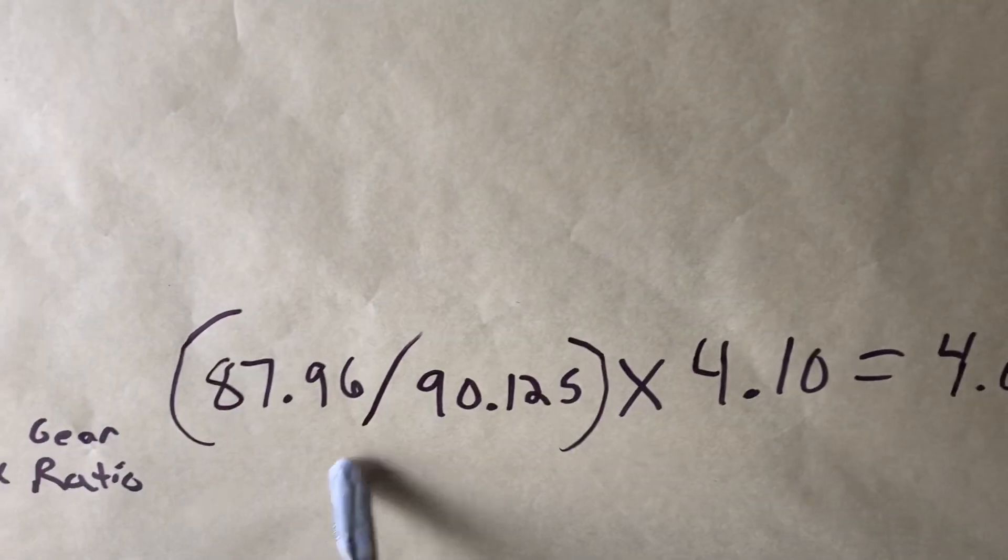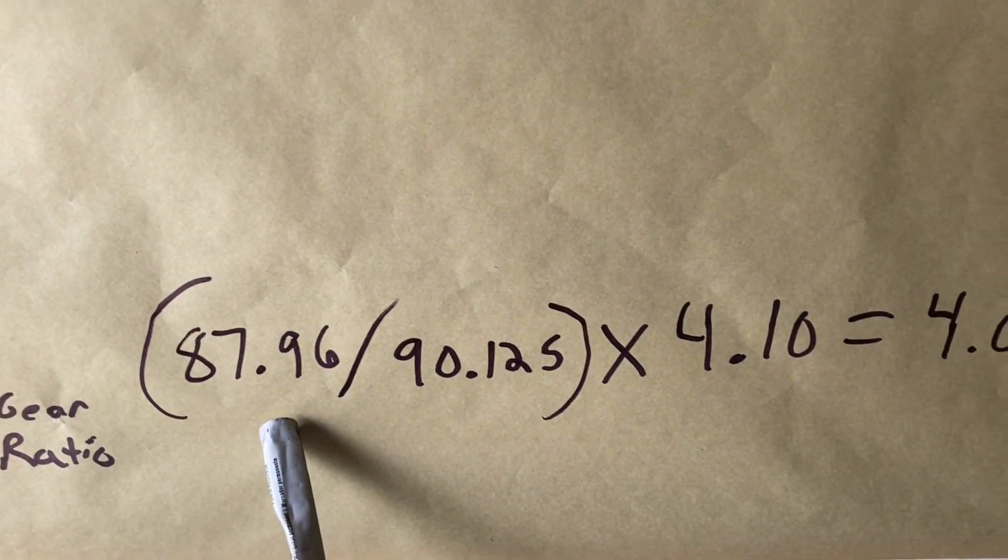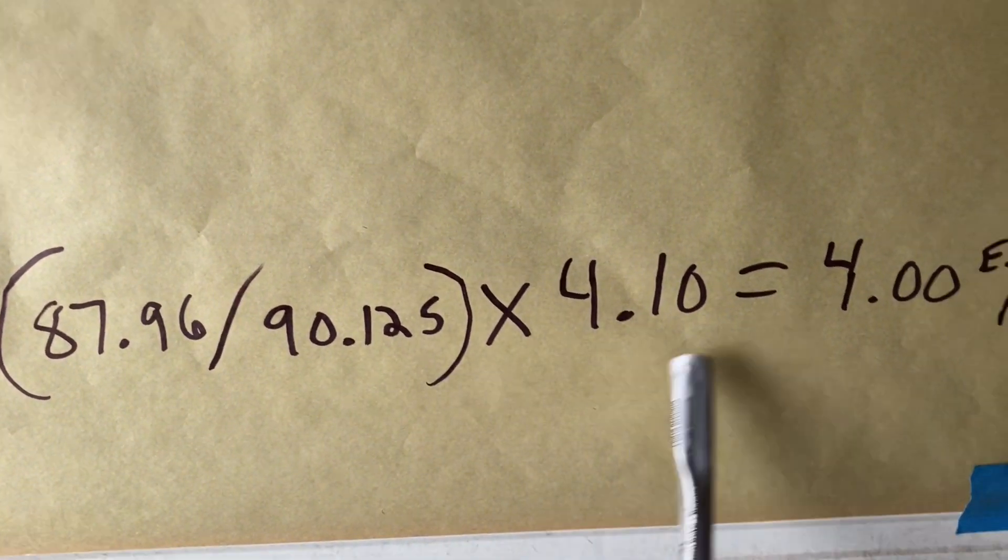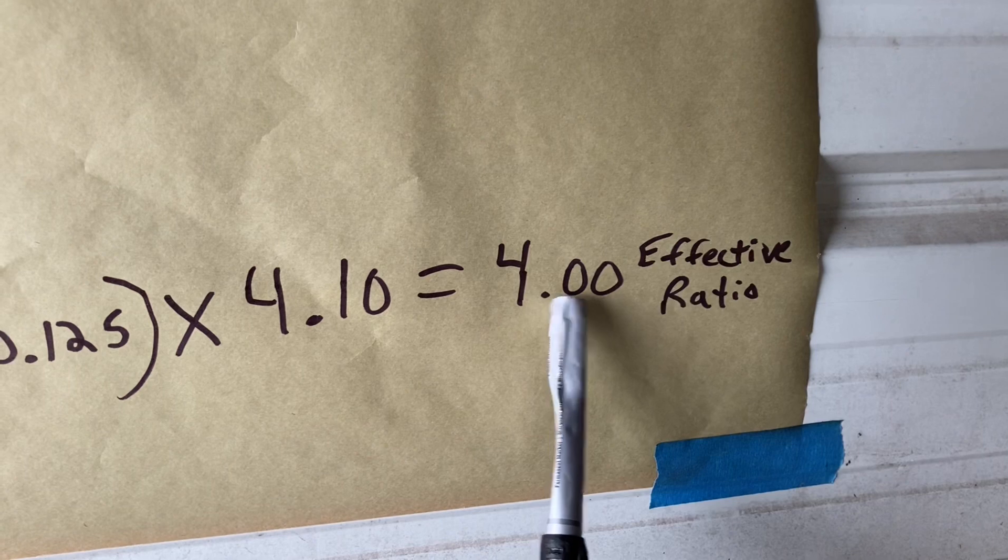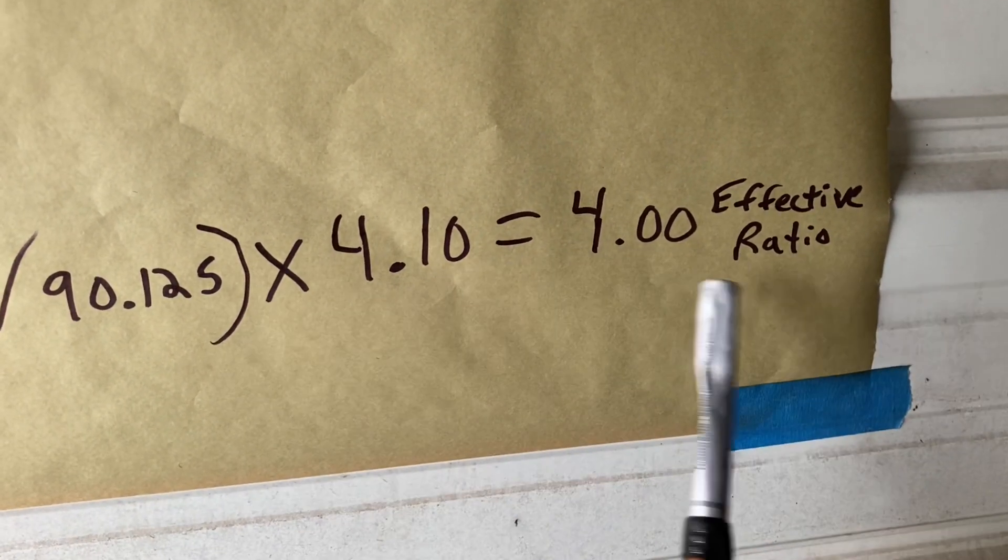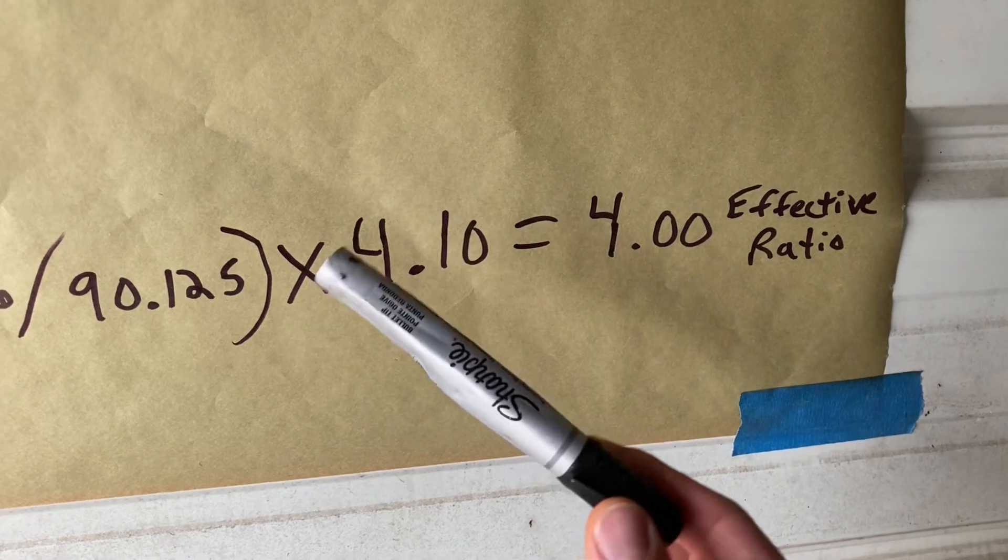So here's my formula. Old tire circumference, 87.96 divided by 90.125 times a 4.10 gives me an effective ratio of 4.00. That is probably not enough to even notice in a gear change at the racetrack.